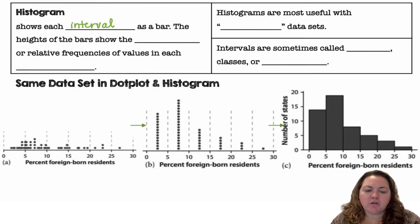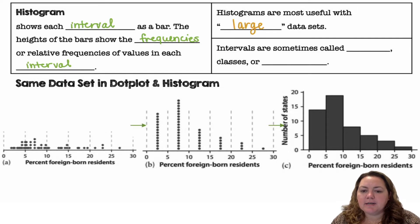A histogram shows each interval as a bar. The heights of the bars show the frequencies or relative frequencies of values in each interval. Histograms are most useful with large data sets. Intervals are sometimes called bins, classes, or buckets.